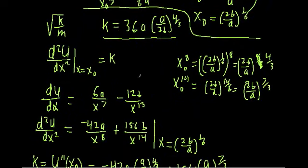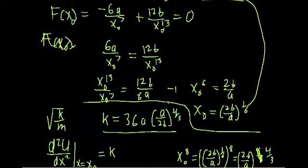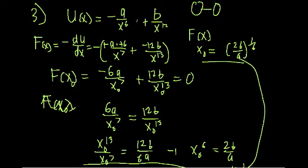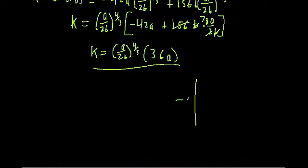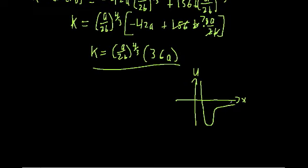That was a really unusual example, but I really like it. The potential we started with is known as the Lennard-Jones potential, or 6-12 potential. It is the potential that describes the interaction between two neutral diatomic molecules, like what you find in hydrogen gas. If you plot this potential as a function of distance x, the Lennard-Jones potential has a characteristic shape with an energy minimum, where x is the separation between the two atoms.